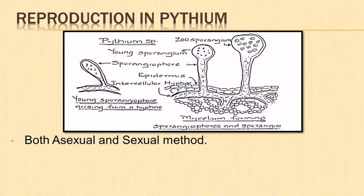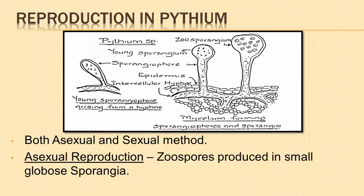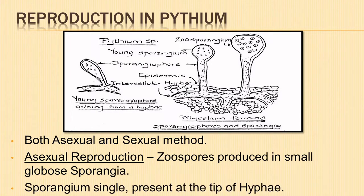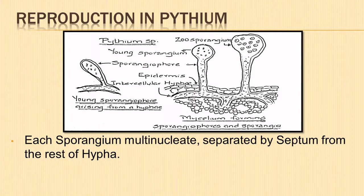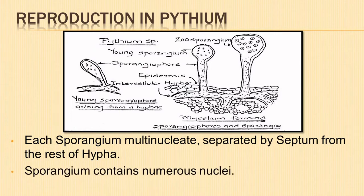Reproduction in Pythium takes place by both sexual and asexual methods. Asexual reproduction takes place with the help of zoospores produced in small globose sporangia. They are formed singly at the terminal end of the hyphae. Each sporangium is a multinucleate structure separated from the rest of the hyphae by a septum.